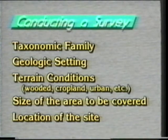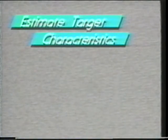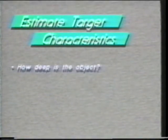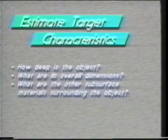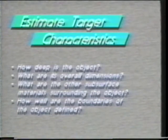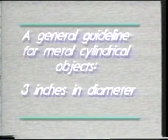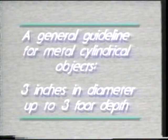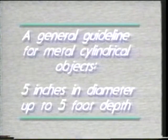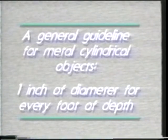First, we need to estimate target characteristics. Here are some questions to answer: How deep is the object that we want to see? What are the overall dimensions of the objects? What are the other subsurface materials surrounding the objects? How well are the boundaries of the objects defined? As a general guideline, if you're looking for metal cylindrical objects, the object should have about one inch of diameter for every foot of depth. So you should be able to find a three-inch metal pipe to a depth of about three feet.